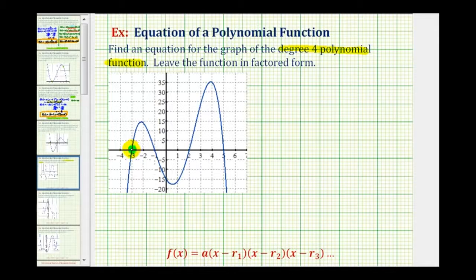The x-intercepts are negative three, negative one, positive two, and positive five. And these are also the roots or zeros of our polynomial function.